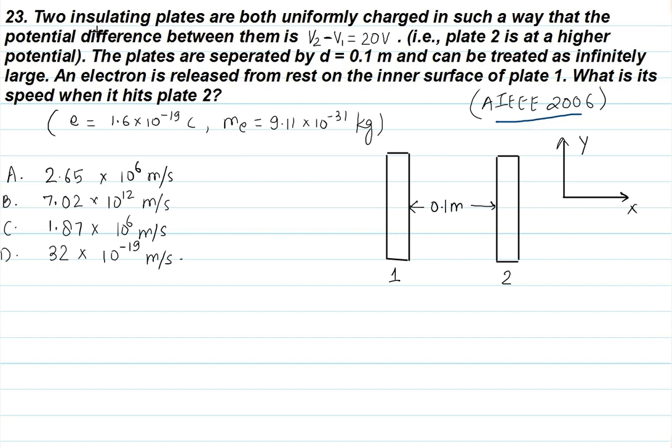What is being said in the question? Two insulating plates are charged uniformly such that the potential difference between them is V2 - V1 equals 20V. This means plate 2 has higher potential and plate 1 has lower potential.